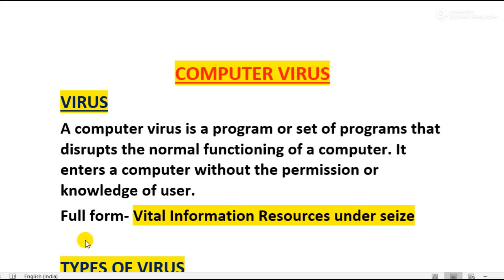So what is a computer virus? A computer virus is a program or a set of programs — a harmful software that disrupts the normal functioning of a computer. It enters a computer without the permission or knowledge of the user. The full form of VIRUS is Vital Information Resources Under Siege. A computer virus actually damages essential resources of a computer like memory, processing speed, data, and programs.